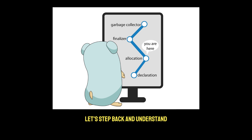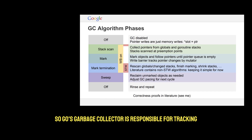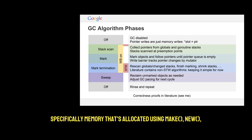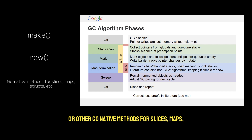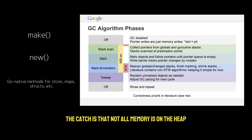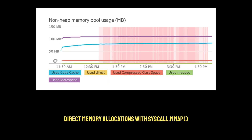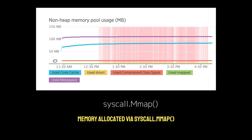An important question to ask: why does Go's garbage collector not control certain memory allocations? Go's garbage collector is responsible for tracking and reclaiming heap memory — specifically memory allocated using make, new, or other Go-native methods for slices, maps, structs, and objects. The catch is that not all memory is on the heap. There's also memory outside of the heap that the garbage collector does not control. For example, direct memory allocations with syscall.mmap. Memory allocated via syscall.mmap lives in native memory, not the Go heap.